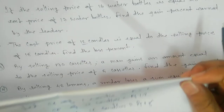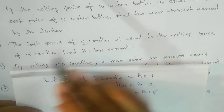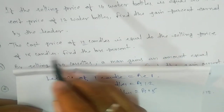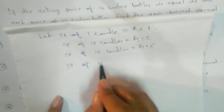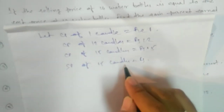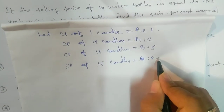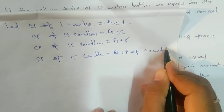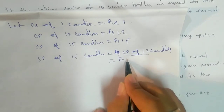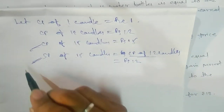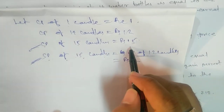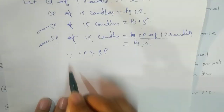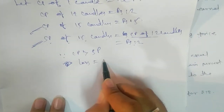The SP of 15 candles equals the CP of 12 candles, which is ₹12. So SP of 15 candles = ₹12, and CP of 15 candles = ₹15. Since CP is greater than SP, there is a loss. Loss = CP − SP = ₹15 − ₹12 = ₹3.